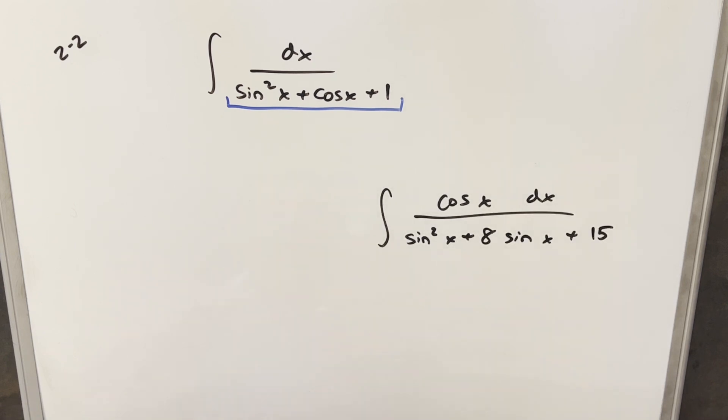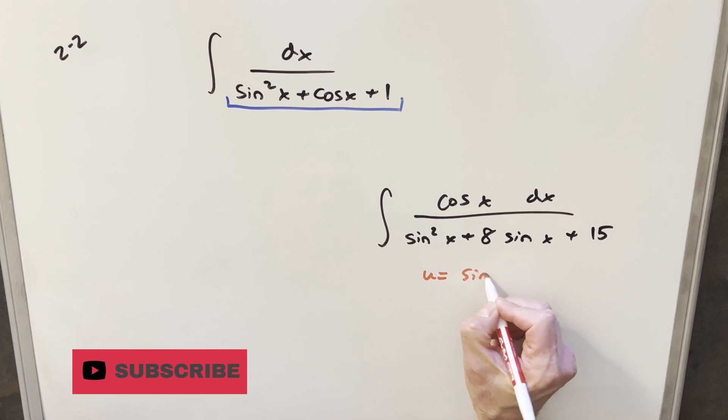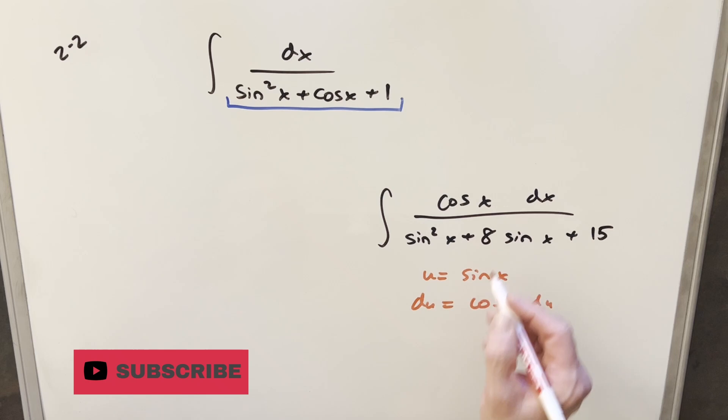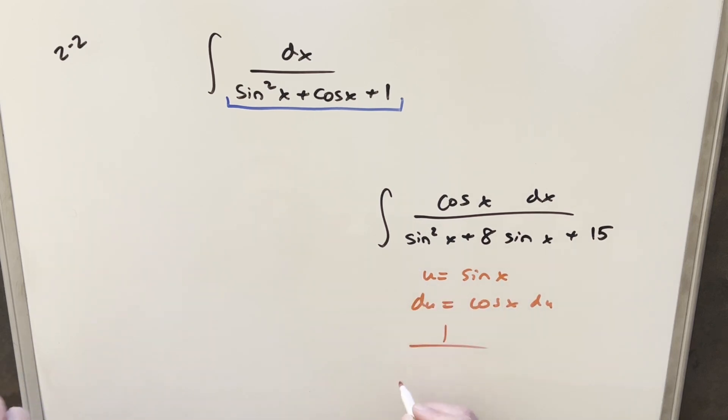Sometimes you'll see an integral like this where you can just do a u substitution for sine x. The nice thing with that is we have our derivative right in the numerator. So this is going to reduce to something like u squared plus 8u plus 15. From here, this is factorable and you can break it up using partial fractions or whatever methods you have. This problem is going to be relatively easy.